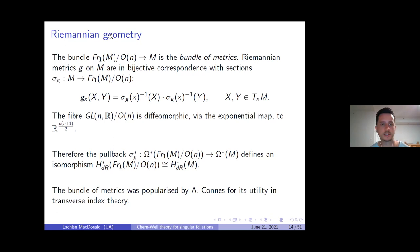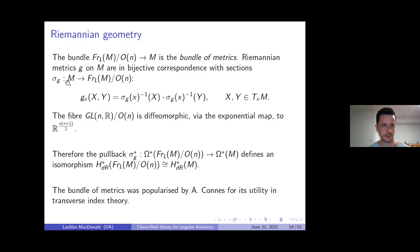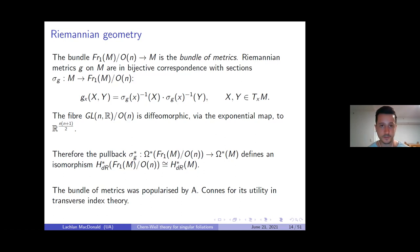I believe it was Alain Connes who named this bundle the bundle of metrics, and I would say he also popularized its use. One beautiful feature of this bundle is that it admits a tautological Riemannian structure which is invariant under lifts of arbitrary diffeomorphisms from the base manifold M. Any diffeomorphism of M lifts to a diffeomorphism of the total space, and the tautological metric is diffeomorphism invariant — a beautiful fact which Connes used very successfully in his study of transverse index theory.